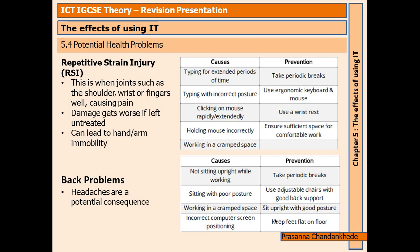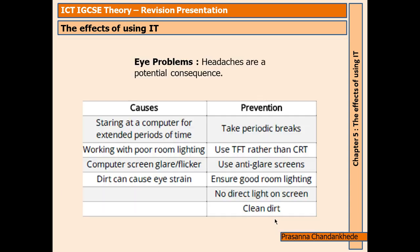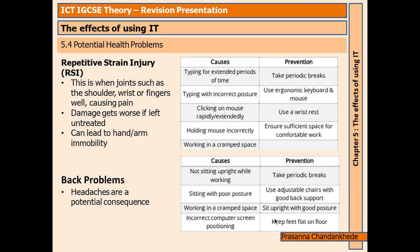Potential health problems include RSI (Repetitive Strain Injury), back problems, and eye problems. RSI occurs when joints such as the shoulders, wrists, or fingers are overworked, causing pain. The damage gets worse if left untreated and can lead to hand or arm immobility.